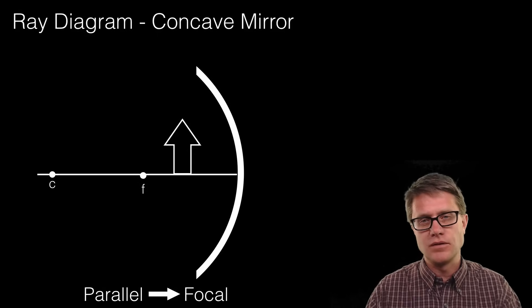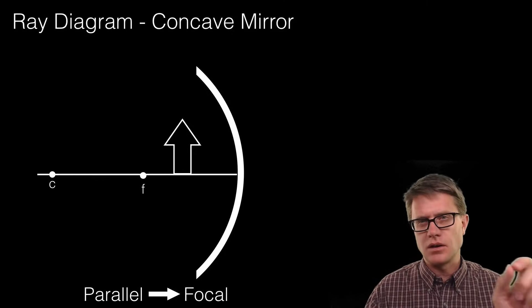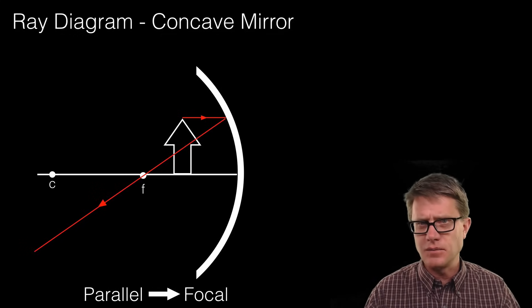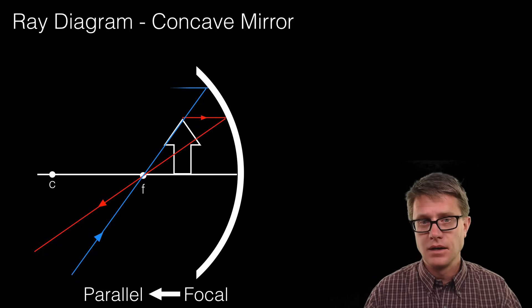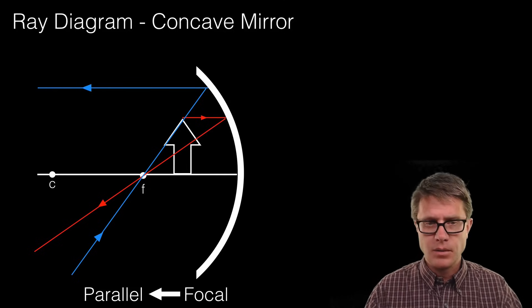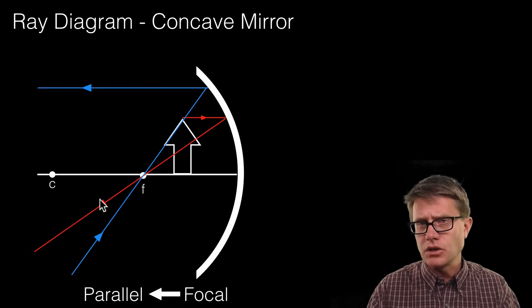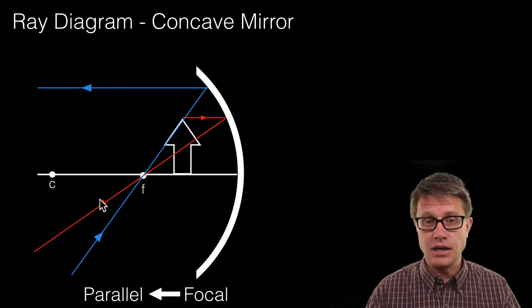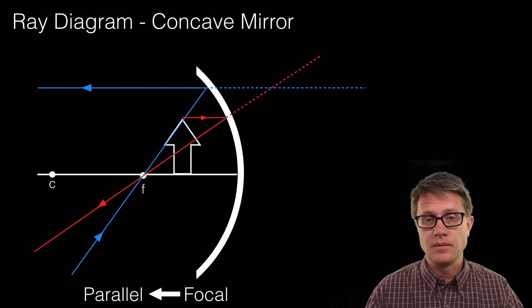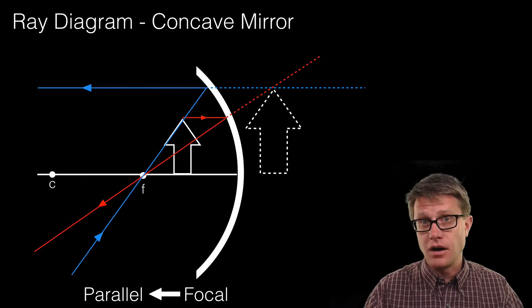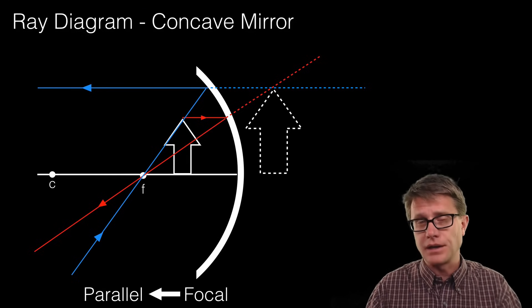Now let us see what happens when the object moves inside the focal length — this is where it gets a little crazy. Start at the top: go parallel to the mirror through the focal. But now it is hard to go through the focal directly, so you turn it around and go through the focal on the other side, then draw it coming off parallel. What you notice is that the two rays moving away from the mirror are diverging — not converging at any point. That tells you there is no image on this side of the mirror. Extend those rays into the virtual side of the mirror, and the image is actually on that virtual side — larger in size and upright.